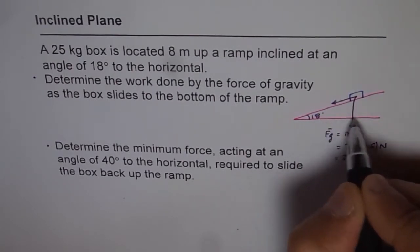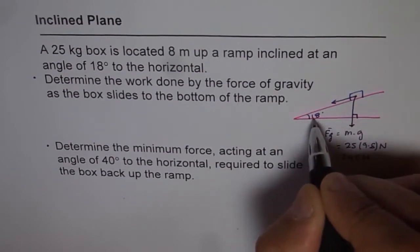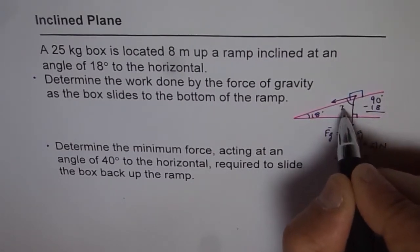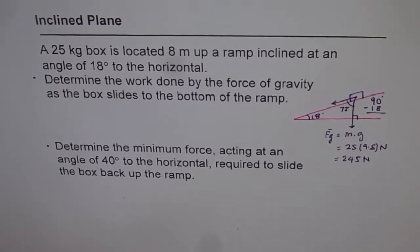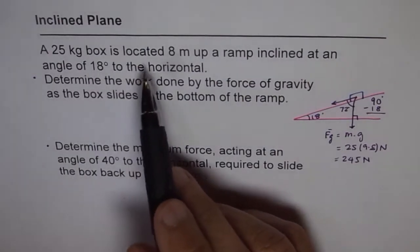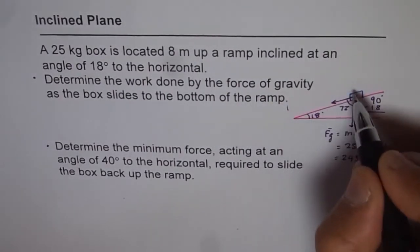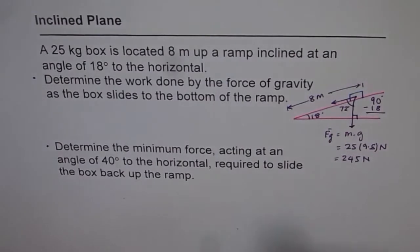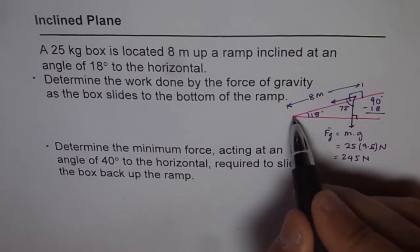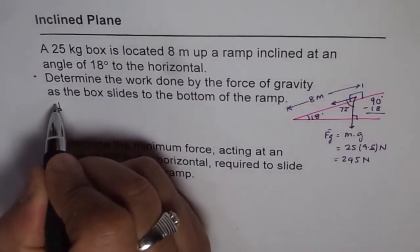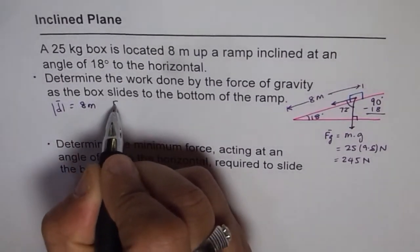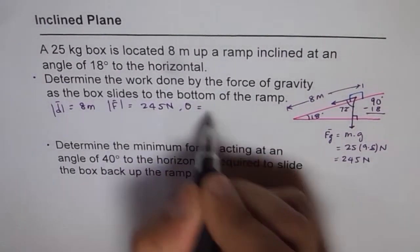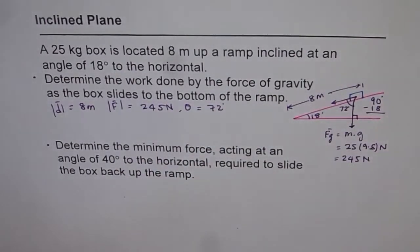The angle it makes — if you see this triangle — this is a right triangle. In this right triangle, if we have 18 degrees here, then this has to be 90 degrees minus 18, that is 72 degrees. The box is located 8 meters up the ramp, so this distance is 8 meters. Because of this force, the box slides to this point which is 8 meters away. We have a displacement vector of magnitude 8 meters, a force vector of magnitude 245 Newtons, and the angle theta between them is 72 degrees.